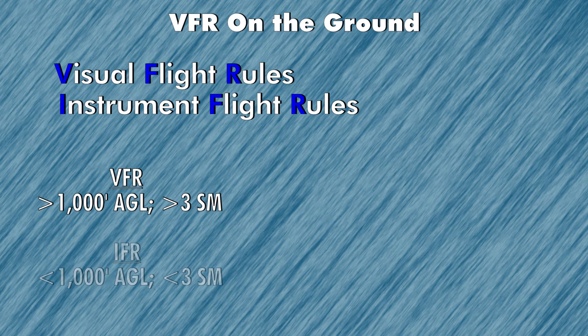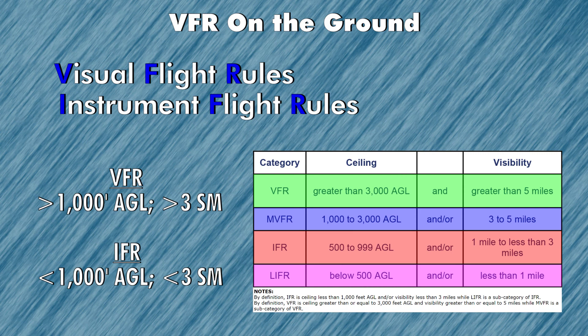IFR, however, is less than 1,000 feet and less than three miles of visibility. On the chart on the right-hand side, you'll see VFR, marginal VFR, IFR, and low IFR. Basically, marginal and low are just subsections of VFR and IFR, but anything above 1,000 feet and three miles is considered VFR. So that's when you're on the ground, standing at the airport, looking at the cloud coverage.